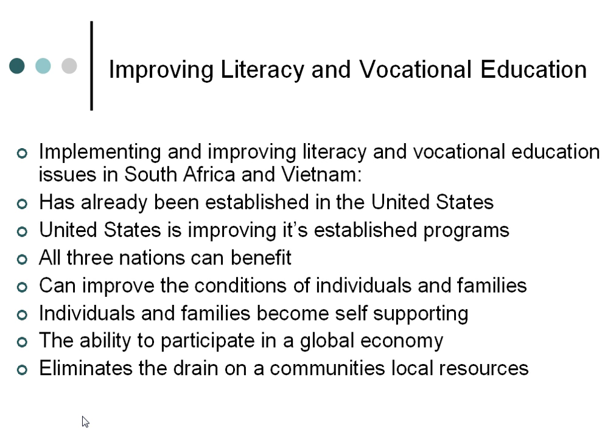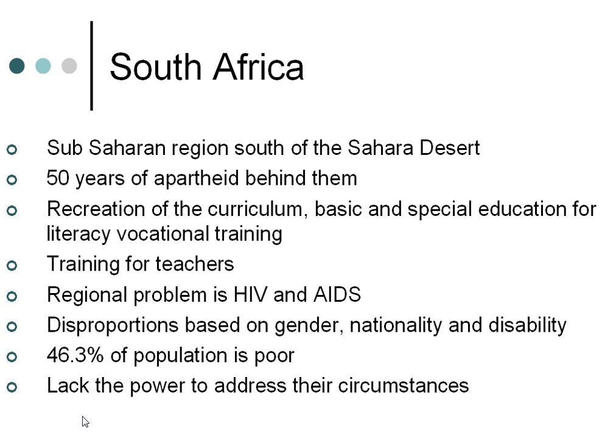Literacy and vocational education skills can help individuals and families become self-supporting with the ability to participate in a global economy. South Africa, with 50 years of apartheid behind them, became a democracy. The Sub-Saharan region, which refers to the areas that lie south of the Saharan desert, has been identified by inadequate development, poverty, declining public services, and the collapse of the socio-political infrastructure.